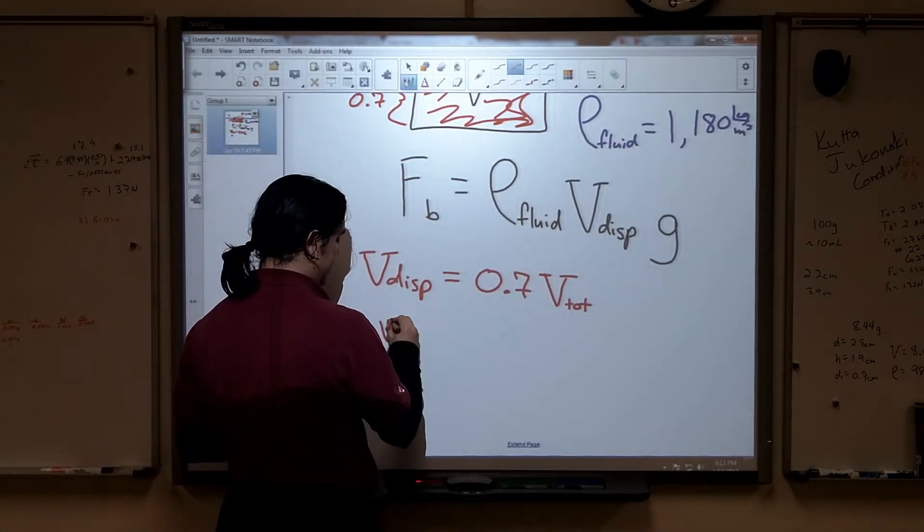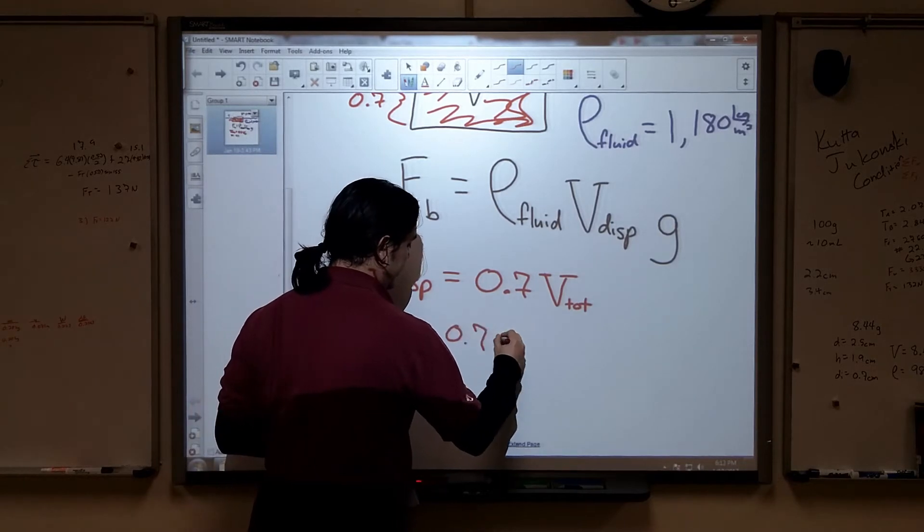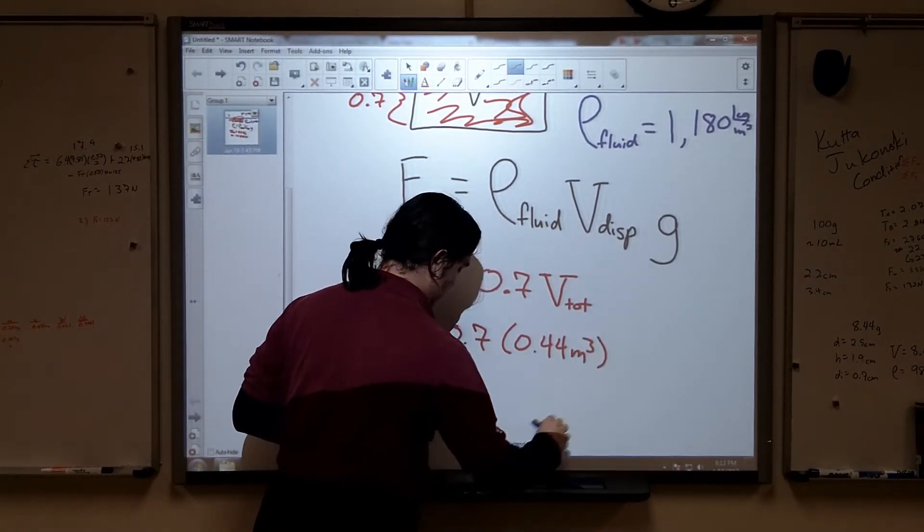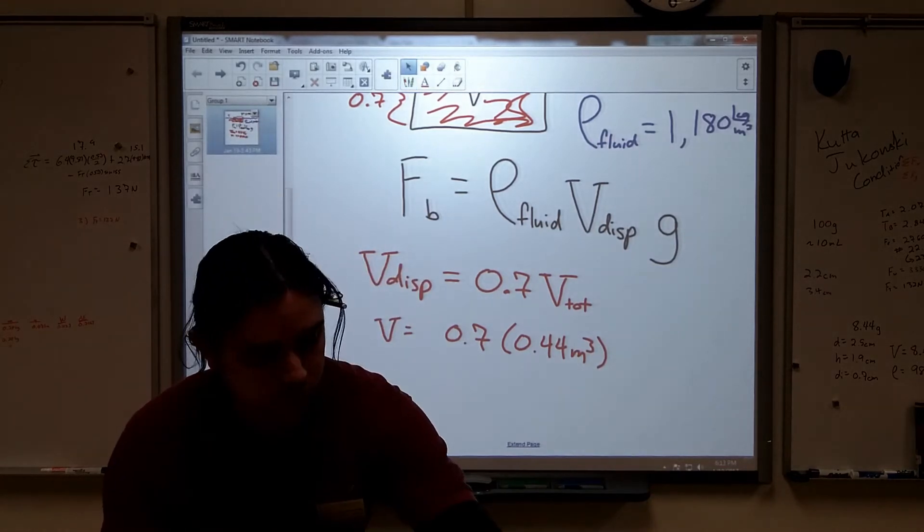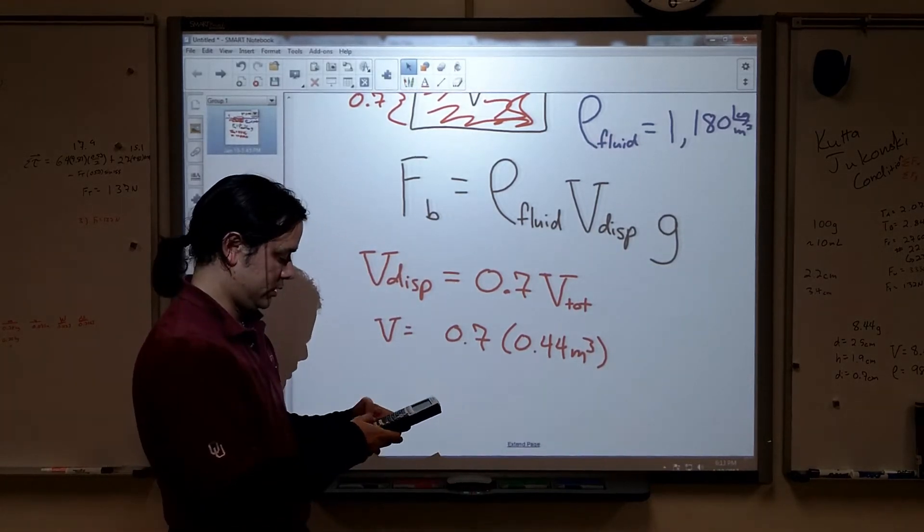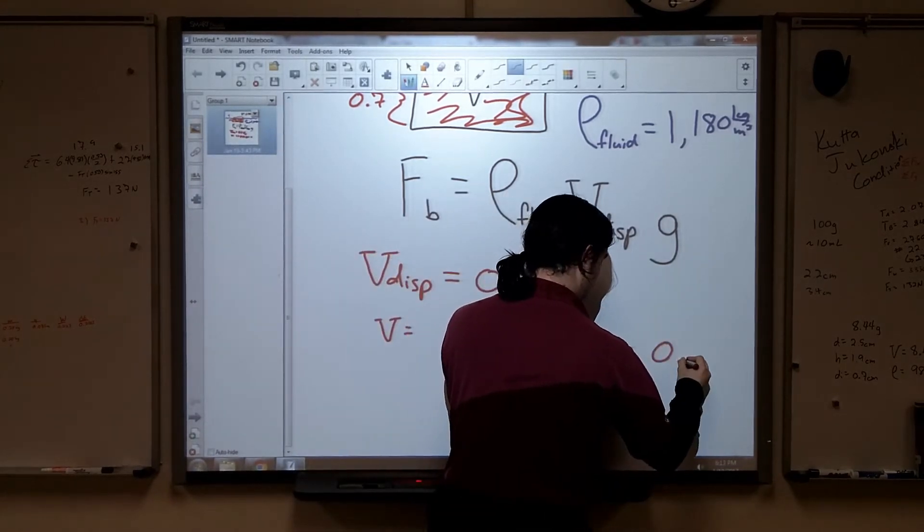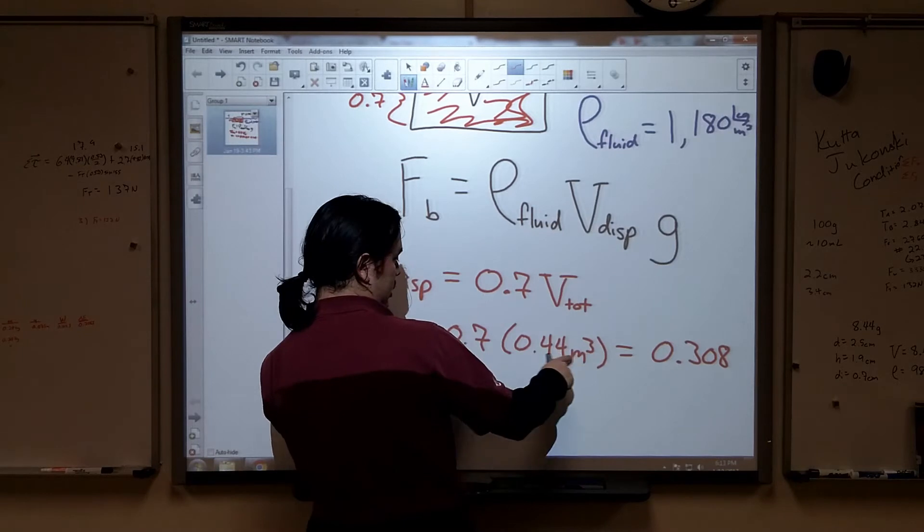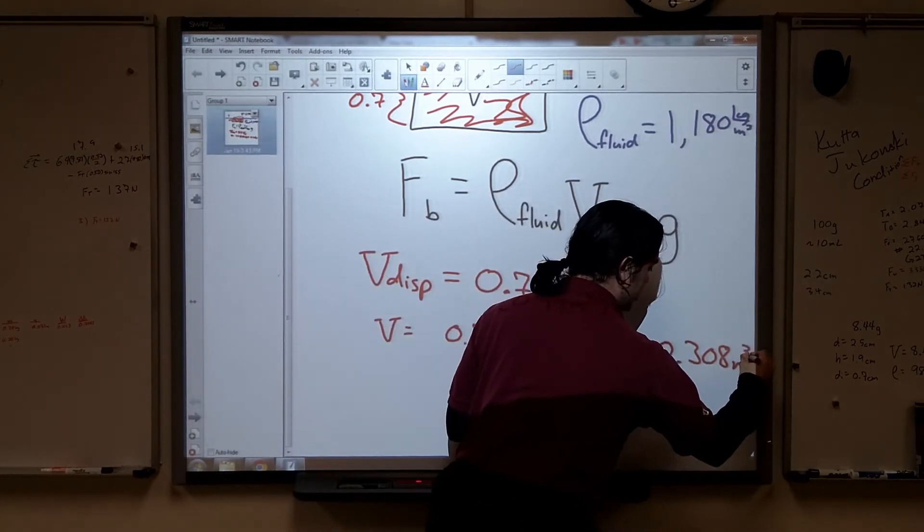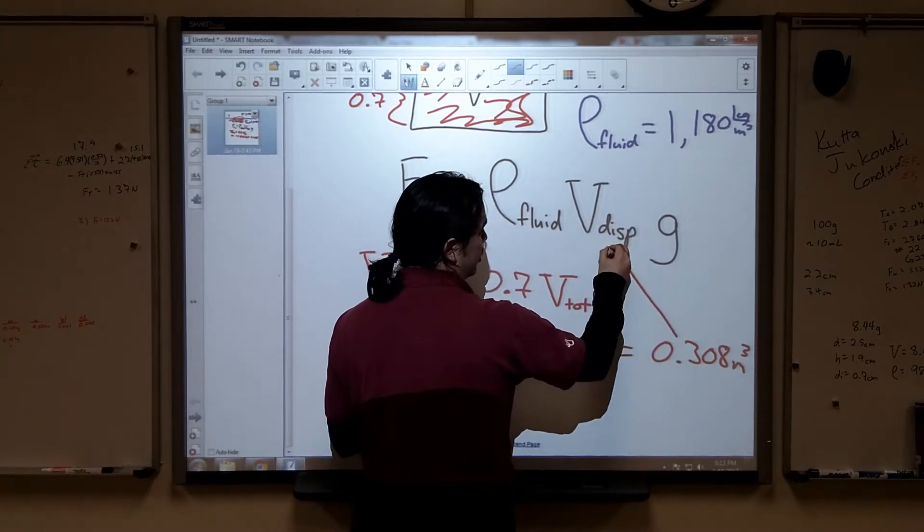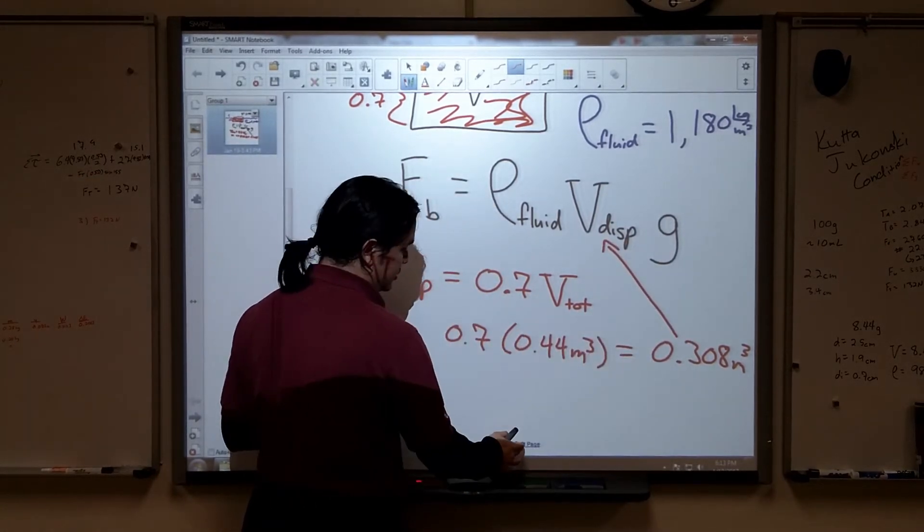Volume displaced is therefore equal to 0.7 times 0.44 cubic meters. 0.7 times 0.44, I get 0.308 cubic meters. That's how much is beneath the liquid, and how much liquid we've pushed out of the way, which is just the volume displaced.